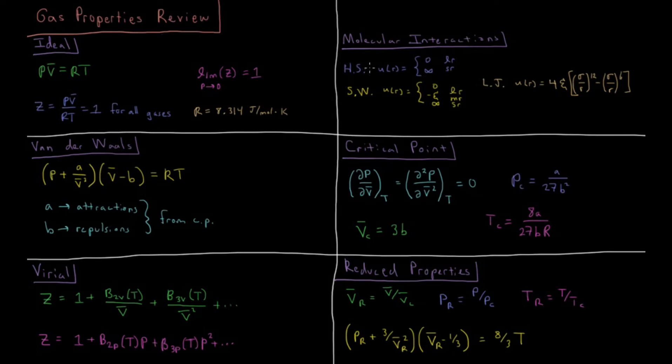The hard sphere model describes the potential as a function of separation as being 0 at long range and infinity at short range. So the molecules effectively have some excluded volume.